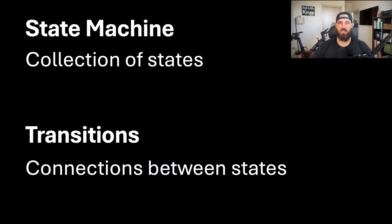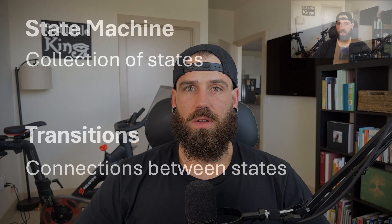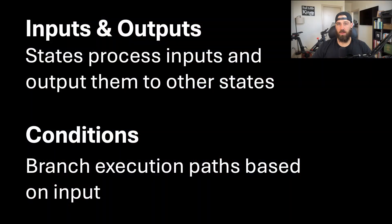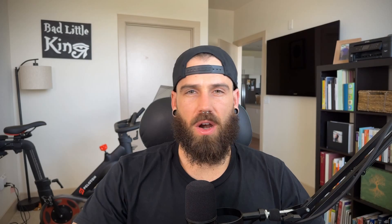Another core concept is a state machine — a collection of states that define your workflow. Transitions are connections between states that define the flow of execution. Each state can receive an input, process it, and output it to another state. Finally, conditions are used in choice states to branch execution paths based on data.